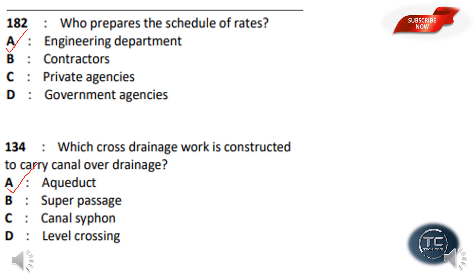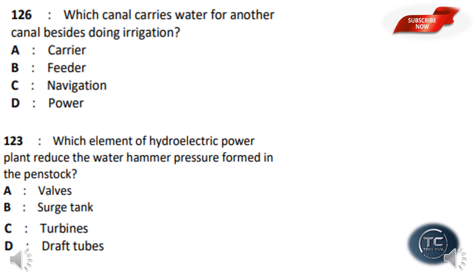Which canal carries water for another canal besides doing irrigation? The options are: Carrier, Feeder, Navigation, Power. The answer is Carrier — a carrier canal carries water for another canal besides irrigation.